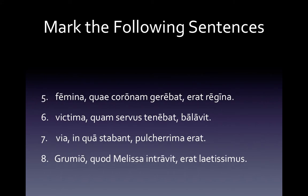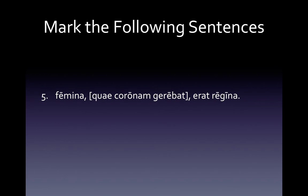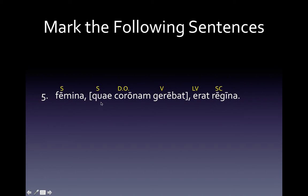Pause the video, copy these down, take a few minutes to mark them up, and then unpause the video and check your answers. Let's look at number five. I have 'quai coronam garibot' blocked off because that is the relative clause. Here is everything labeled. You can check your charts to make sure all of these make sense — if not, please write down some questions and ask them. 'Quai' can be a couple of different things. In this case it is nominative, feminine, singular. The nominative makes it the subject of its own clause, and the feminine and singular tells us what its antecedent is. 'Famina' is outside of the relative clause — it is also feminine and singular, therefore it's the antecedent. The sentence will read: 'the woman who was wearing a crown was the queen.'